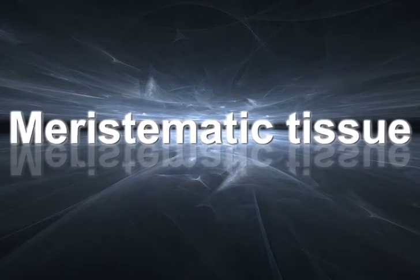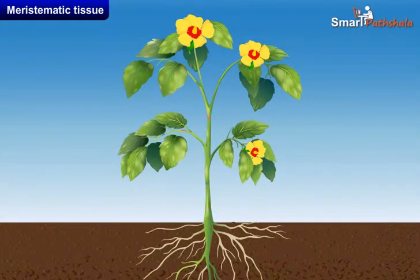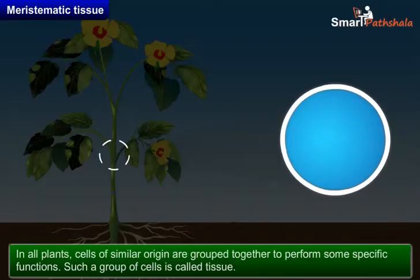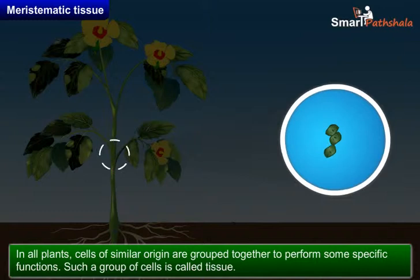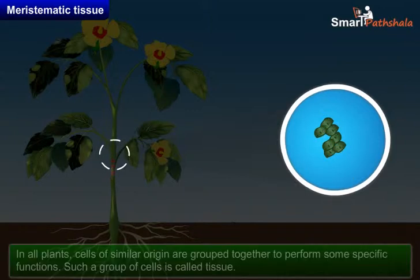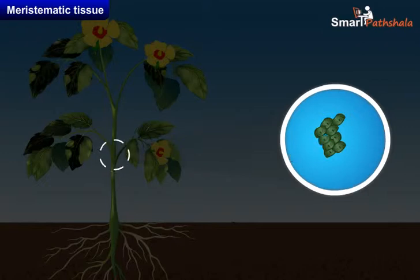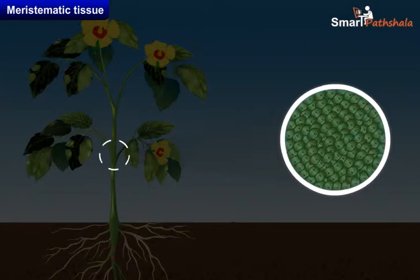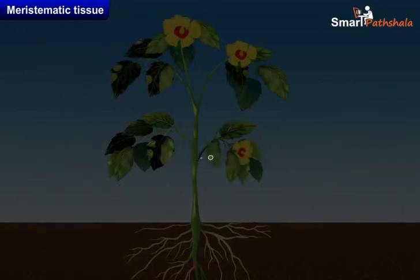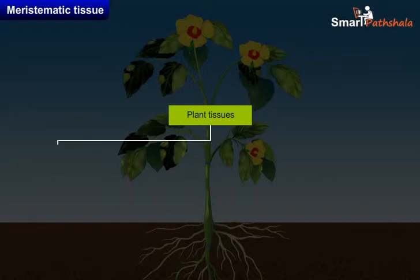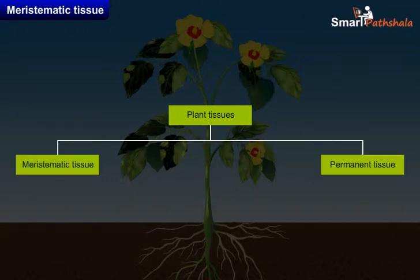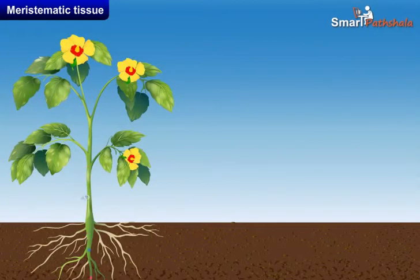How are the parts of a plant grown? In all plants, cells of similar origin are grouped together to perform specific functions. Such a group of cells is called tissue. Each tissue has a specific function to perform. Plant tissues are of two main types: meristematic tissue and permanent tissue. In this module, we will discuss only meristematic tissue.